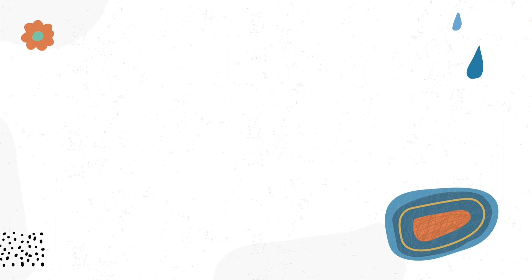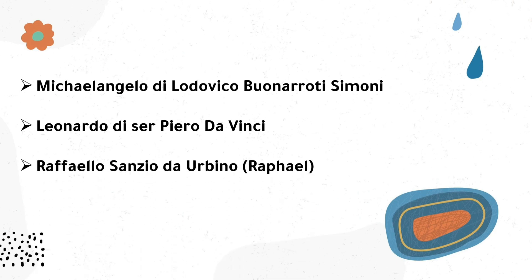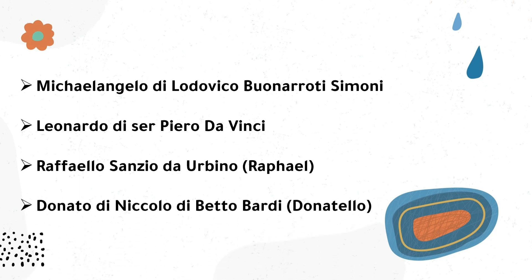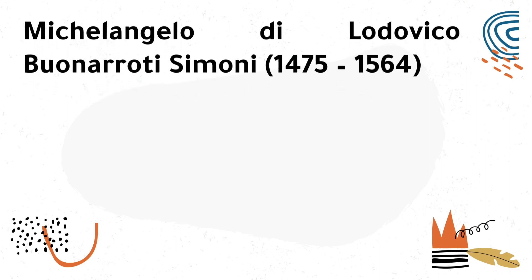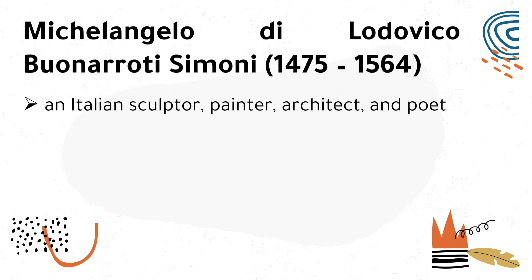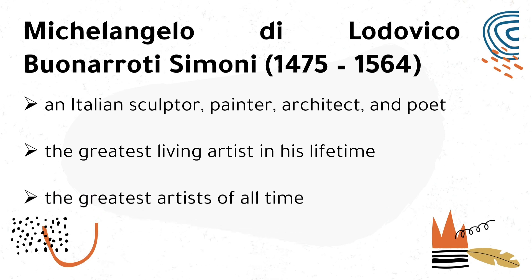Here are the different artists during the Renaissance period: Michelangelo di Lodovico Bonarotti Simoni, Leonardo di Sir Piero da Vinci, Raffaello Sanzio da Urbino also known as Raphael, and Donato di Niccolò di Betto Bardi also known as Donatello. Michelangelo was an Italian sculptor, painter, architect, and poet, considered the greatest living artist in his lifetime and one of the greatest artists of all time.